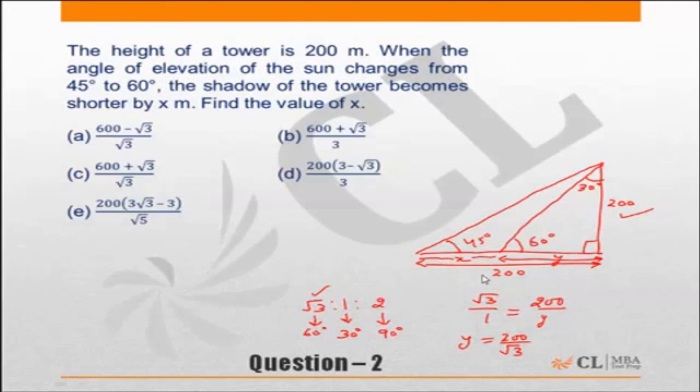So my x distance will be 200 minus 200 by root 3, which is 200 times 1 minus 1 by root 3.